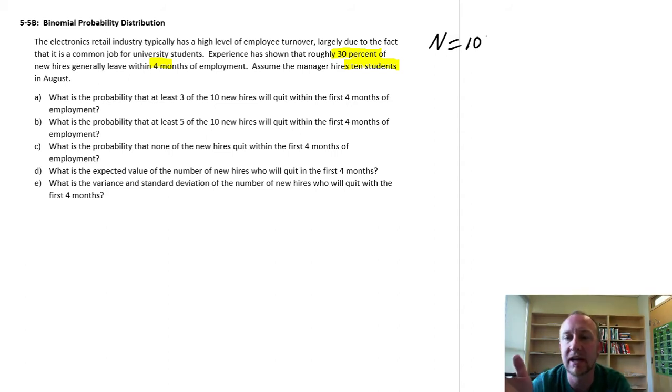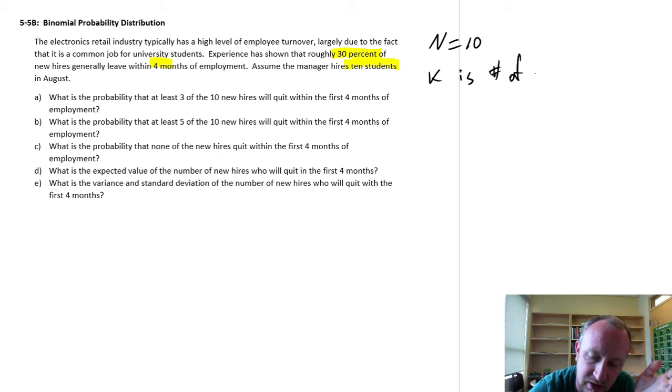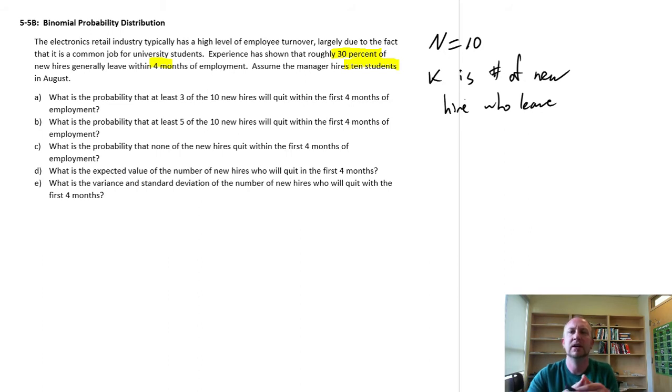And of those 10, some will stay and some will leave. Now, this might sound counterintuitive, but to keep it in the context of this problem, let's denote our success, so here we're called k is our success. In this case, k is a leave, or k is number of new hires who leave. So this is what I mean, it sounds a little counterintuitive, but it'll just be easier because this is the probability that we have to work with. 30% leave, so k will be the number of departures that we're going to work with. So our probability of success, in other words, of a new hire leaving, here is going to be 0.3, 0.30.